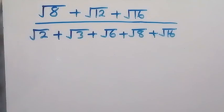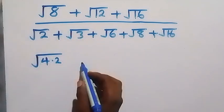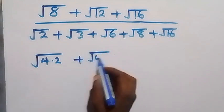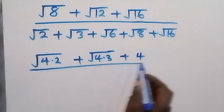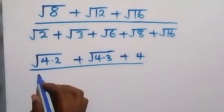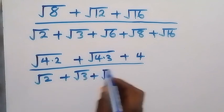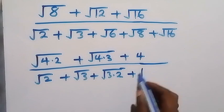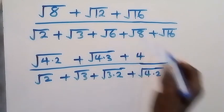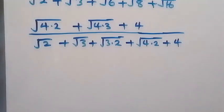Hello, welcome. Let's solve this radical problem. We can rewrite the numerator as: root 4 times 2, which is root 8, plus root 4 times 3, which is root 12, plus root 16, which is 4. In the denominator we have root 2, plus root 3, plus root 3 times 2 which is root 6, plus root 4 times 2 which is root 8, plus root 16 which is 4.